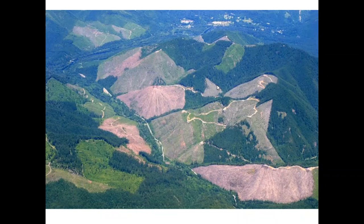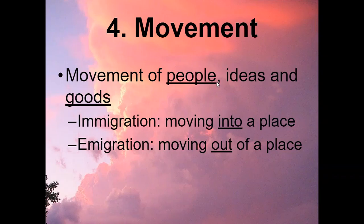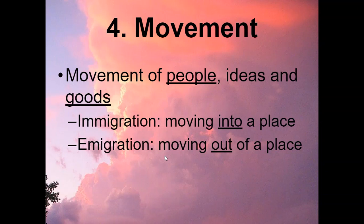Our next theme of geography is movement. Movement is not just moving around from one spot to another. Movement means immigration and emigration. Immigration means moving into one place. The way I remember the difference is: immigration starts with I, and 'im' means to go into. Emigration means to move out. The way I remember emigration is E is the first letter of exit, which also means to leave a place.